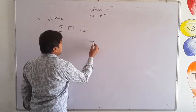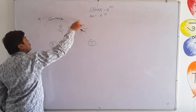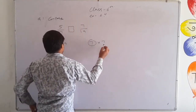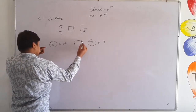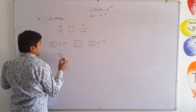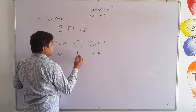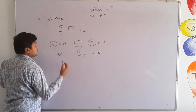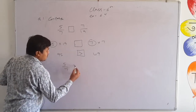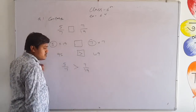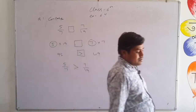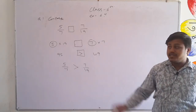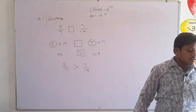Cross multiply: 5 times 19 is 95, and 7 times 7 is 14. Wait — 7 times 7 is 49. Between 95 and 49, the larger is 95 which belongs to 5 — so the fraction with 5 in the numerator, which is 5 upon 7, is the bigger fraction. The remaining questions you must do on your own — the second question also involves comparison, where you fill in a box instead of an equals sign.